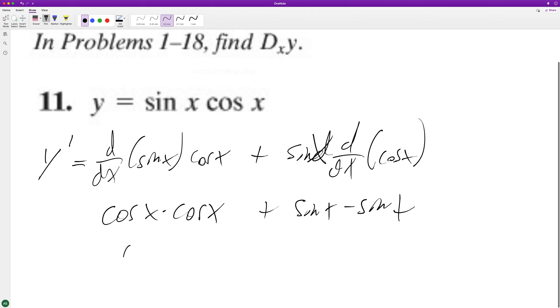So we end up with cosine squared of x minus, because of this minus here, sine squared of x.